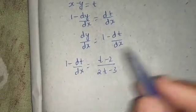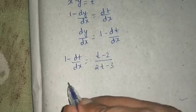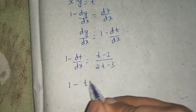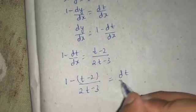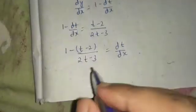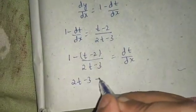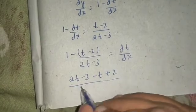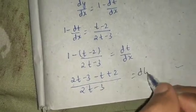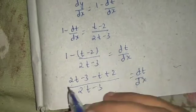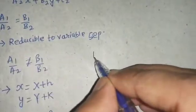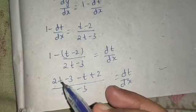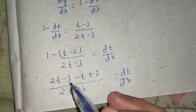Rearranging: 1 minus (t minus 2)/(2t minus 3) equals dt/dx. The left side becomes (2t minus 3 minus t plus 2) divided by (2t minus 3), which simplifies to (t minus 1) divided by (2t minus 3). So dt/dx equals (t minus 1)/(2t minus 3).